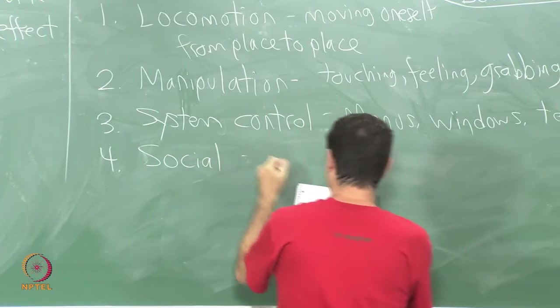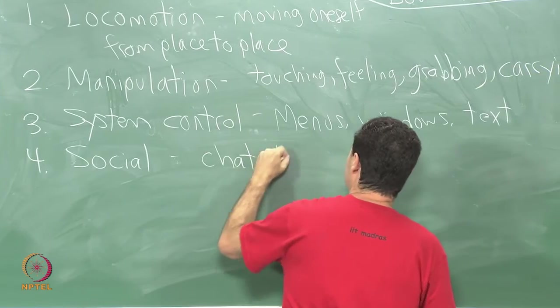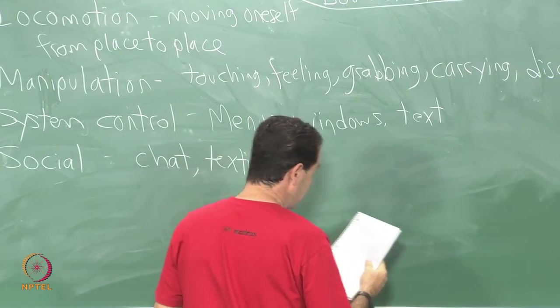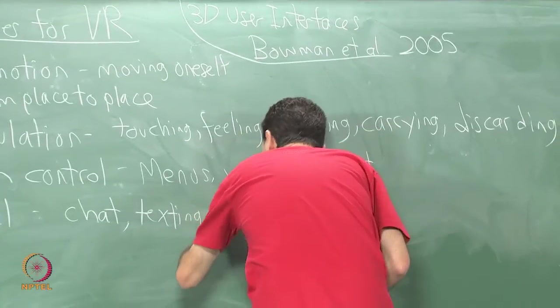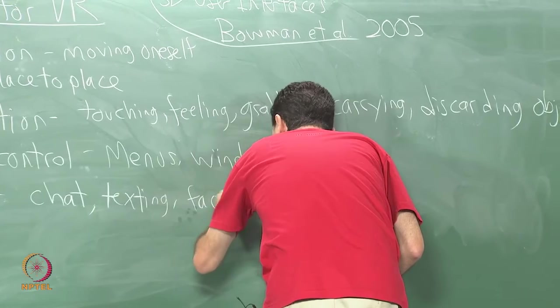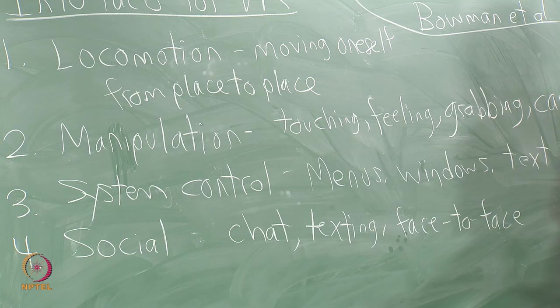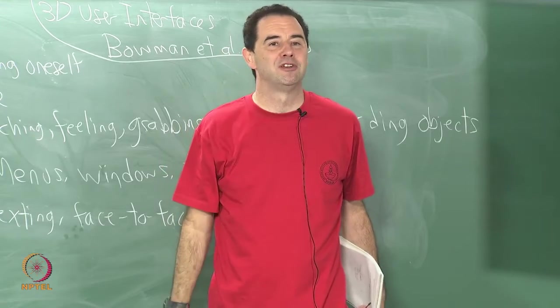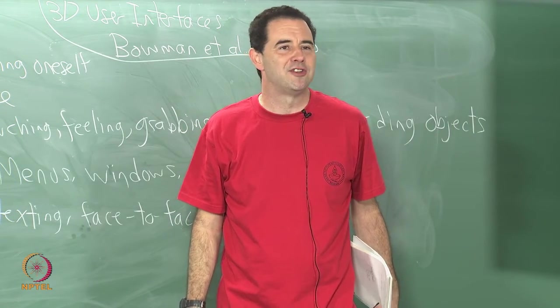Four, social interaction interfaces. So social interfaces: chatting, texting, interacting with people. We end up with some difficult challenges because if you and your friend want to interact in virtual reality and you are each wearing a black object in front of your face, you cannot see each other's eyes.